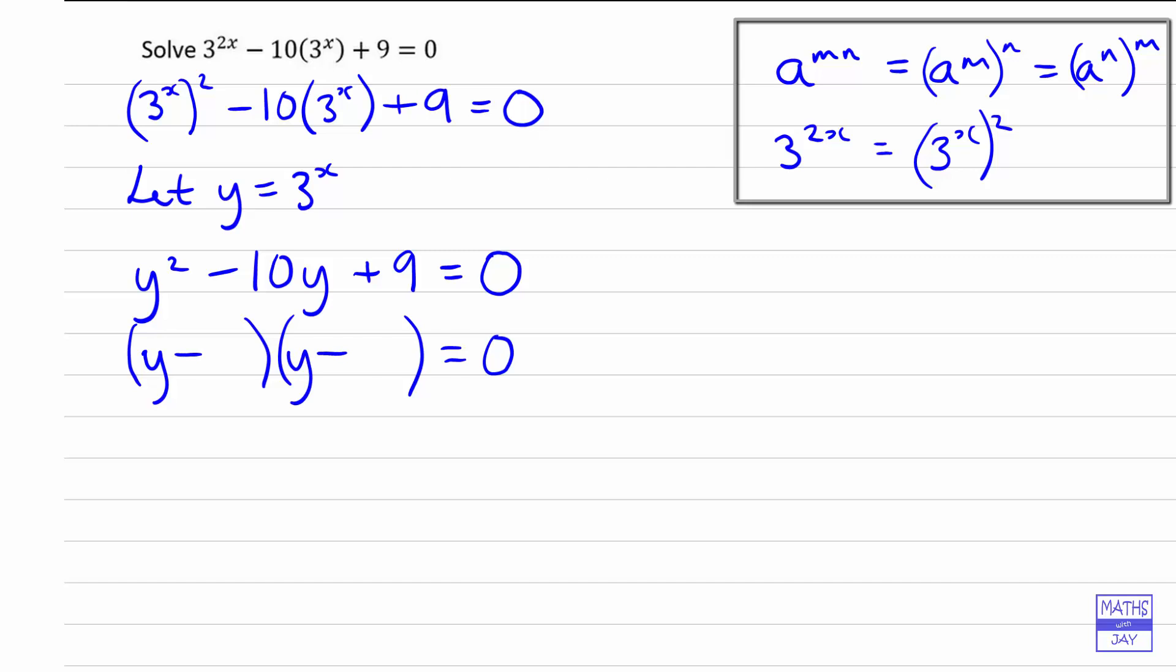So we're looking for two numbers that multiply to 9 and that add up to negative 10. So we've got minus 1 and minus 9. So we know that y must be 1 or 9.